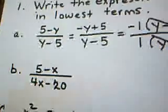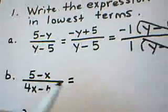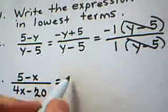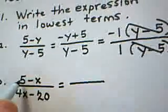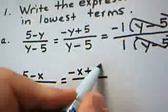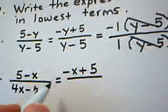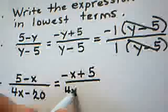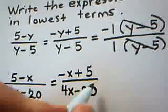When I look at part B, again, I'm reducing to lowest terms. What I want to do, first of all, is rewrite the numerator as the opposite of x plus 5. Let's kind of put it in the right order. The denominator, I have 4x minus 20, which is fine.